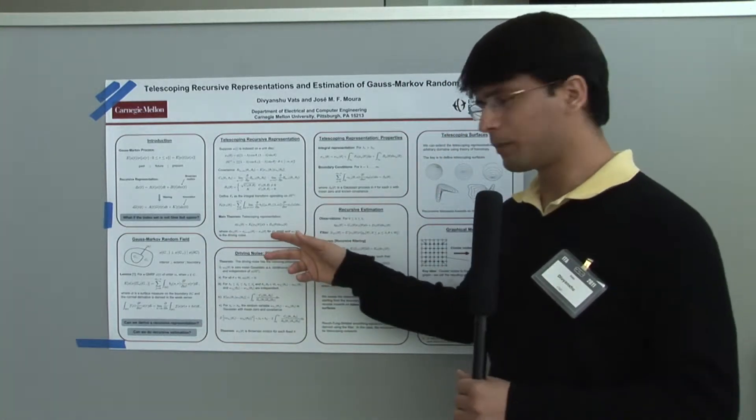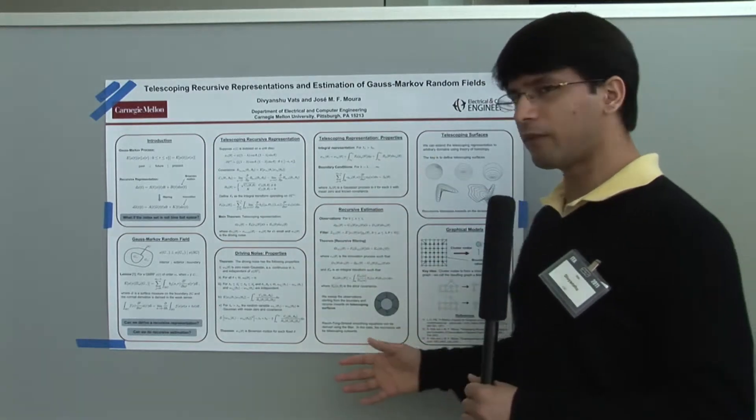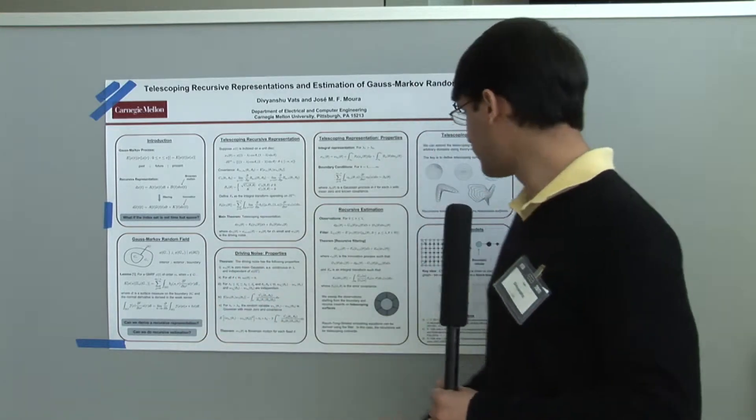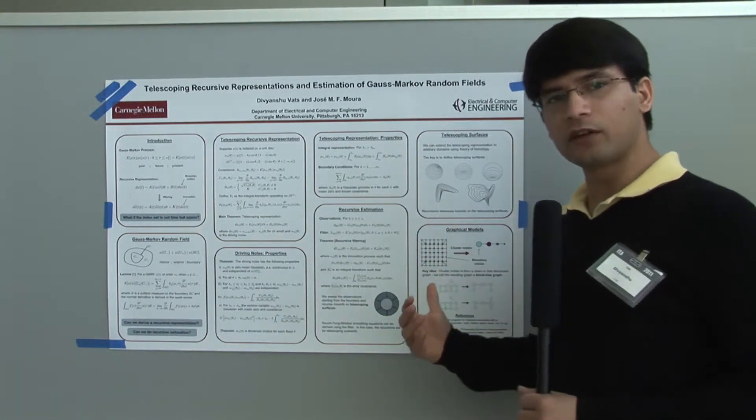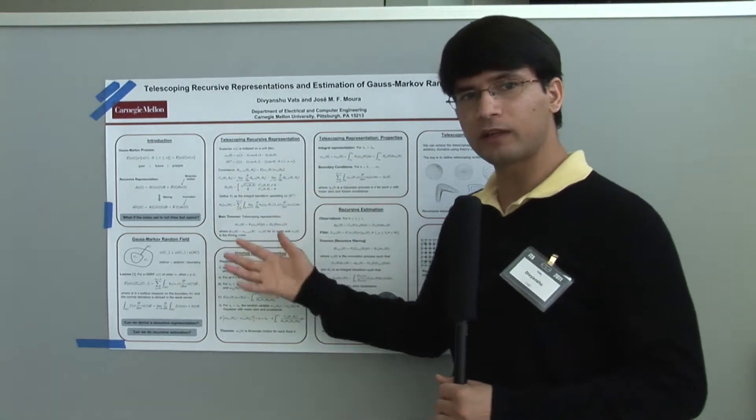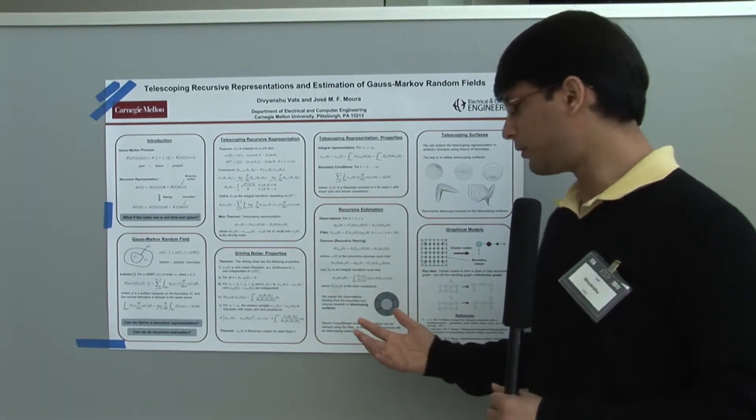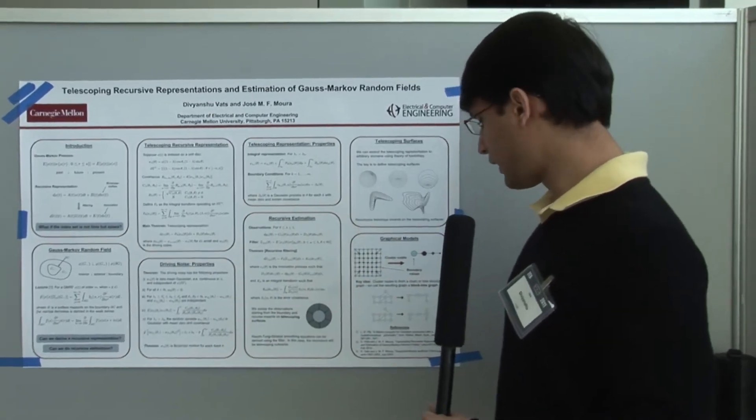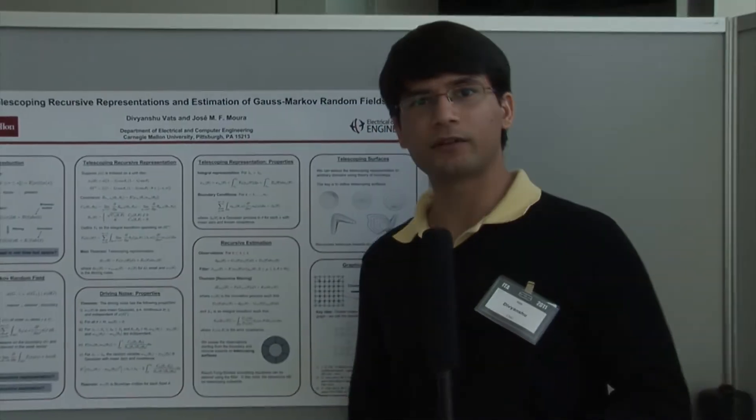telescoping representation, we can derive recursive estimators which extend Kalman filters and recursive smoothers to higher dimensions. There's also an extension to graphical models. If the index set is discrete, how do you generalize this to graphical models? For that, we provide a block tree graph representation. Thank you.